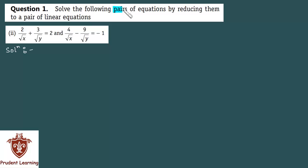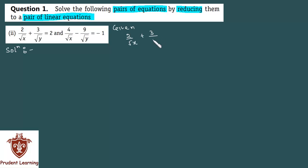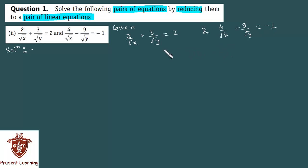Solve the following pairs of equations by reducing them to a pair of linear equations. We are given 2 over root x plus 3 over root y is equal to 2, and 4 over root x minus 9 over root y is equal to minus 1.